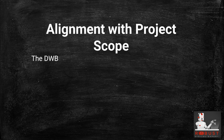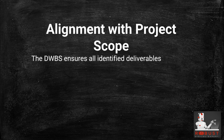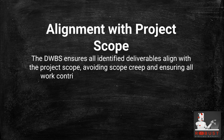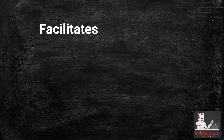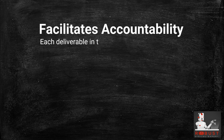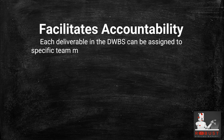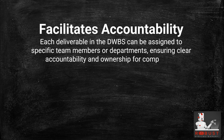Alignment with project scope: The DWBS ensures all identified deliverables align with the project scope, avoiding scope creep and ensuring all work contributes to achieving project objectives. Facilitates accountability: Each deliverable in the DWBS can be assigned to specific team members or departments, ensuring clear accountability and ownership for completion.